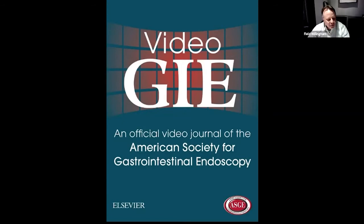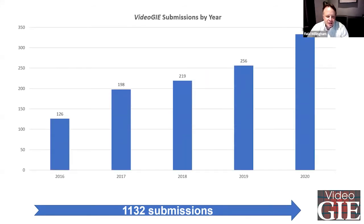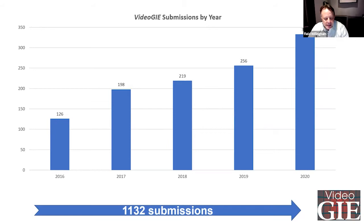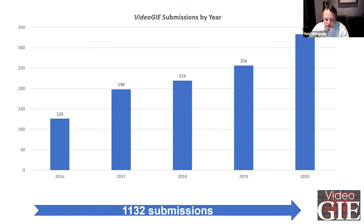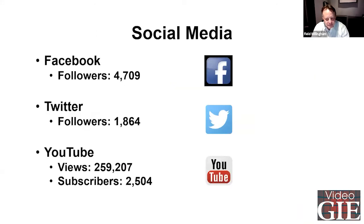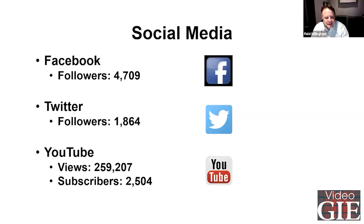Video GIE is thriving. We have more submissions year over year — there were 333, and I think we're going to surpass that in 2021. We look at all of your videos, every single one that's submitted. There's amazing stuff going on out there. Many times, even videos that may not get accepted are usually incredible works. Video GIE is a very active platform on social media — Facebook, Twitter, and YouTube.